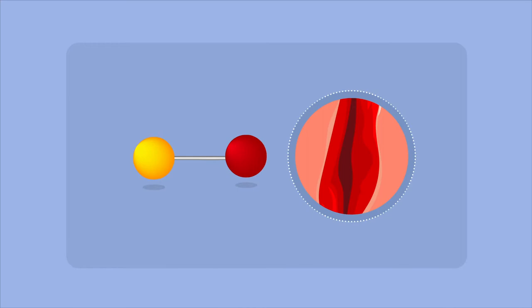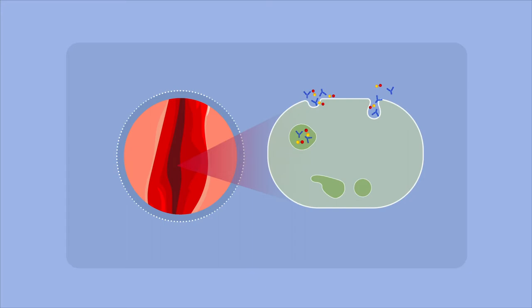Once the fusion protein is taken up by cells in the bloodstream, the neonatal FC receptor, or FCRN, which resides inside endosomes, binds HSA at an acidic pH and transports it to the cell surface where exposure to neutral pH triggers release back into the blood.